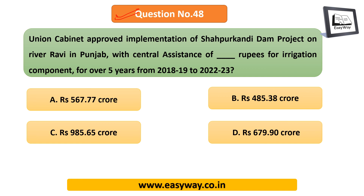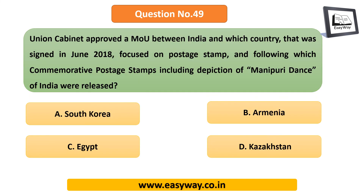Question 48: The Union Cabinet approved the implementation of the Shahpur Kandi Dam Project on River Ravi in Punjab with central assistance of Rs. 485.38 crore for the irrigation component over five years from 2018-19 to 2022-23. A potential exam question: this dam project is on which river? It is on River Ravi in Punjab. Question 49: The Union Cabinet approved an MOU between India and Armenia, signed in June 2018, focused on postage stamps, following which commemorative postage stamps including the depiction of Manipuri dance of India were released.